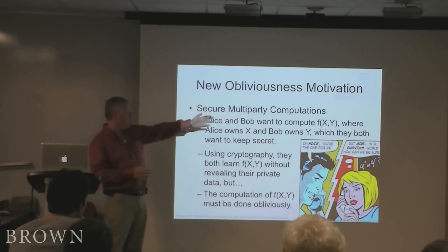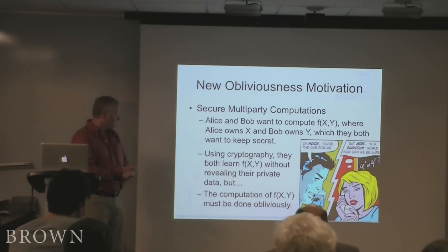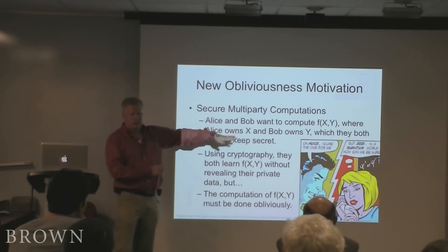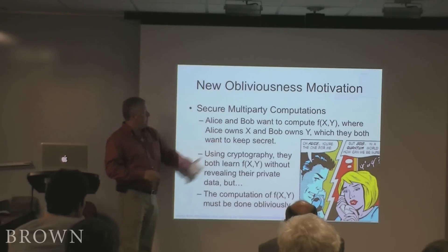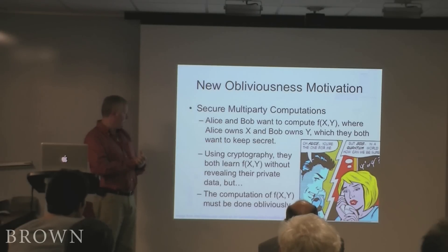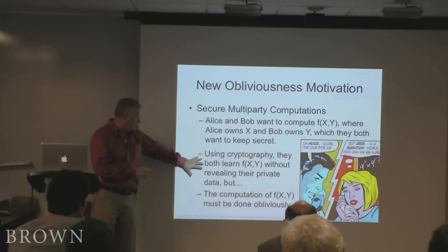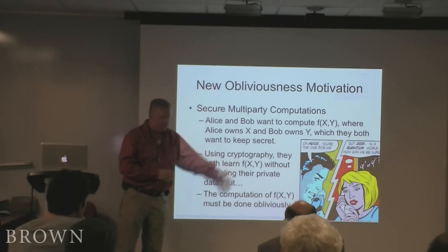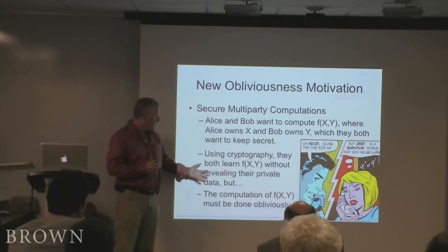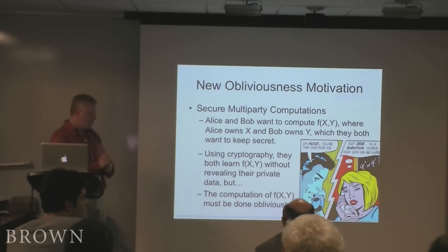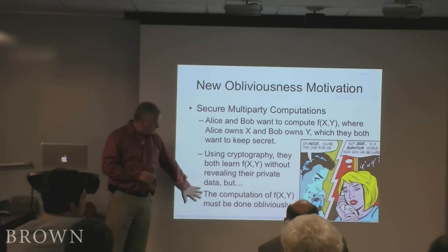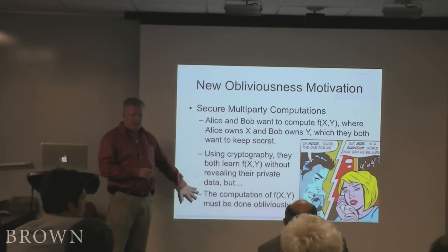These could be sets, numbers, or anything. Both parties want to keep their respective values secret to the extent possible. Using cryptography, there are protocols that allow both to learn the value of f(x, y) without either one revealing their private data — Bob does not learn x and Alice does not learn y. But in order for this to work, the computation of f(x, y) must be done obliviously. This is the key property: during the algorithm, simply taking a certain branch of an if statement could leak information to either Alice or Bob.